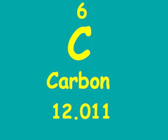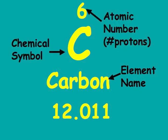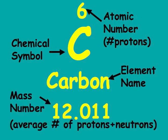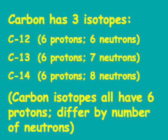Let's take a look at what could be a typical square out of the periodic table. For carbon, you've got the chemical symbol, which can be one or two letters. You've got the atomic number — the number of protons. The mass number, which is the average number of protons and neutrons that occur naturally. Isotopes have in common that they have the same number of protons, so they're the same element, but they have a differing number of neutrons, so their weight is different.